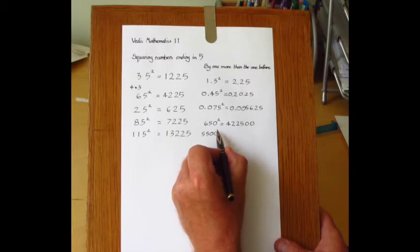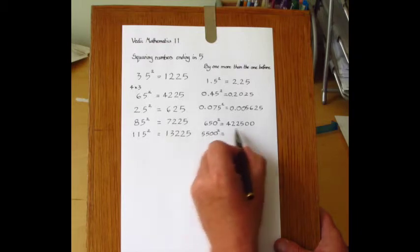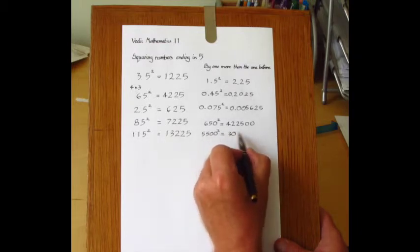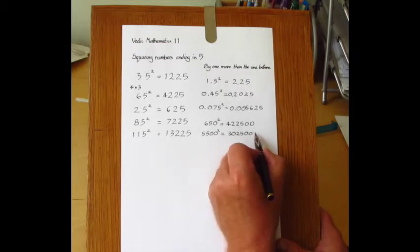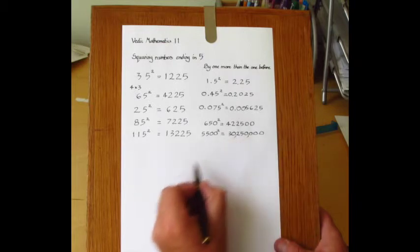5500 squared: 5 times 6 is 30, put down 25, and double the number of zeros, giving 30250000.